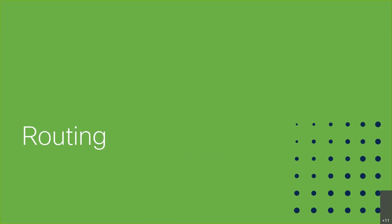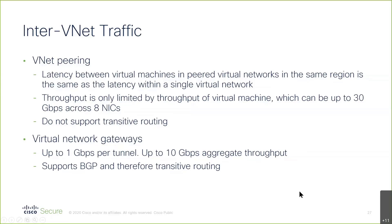The routing is a bit tricky, but we'll cover it fairly quickly. The routing can be peering between VNets, or it can be virtual network gateways, which are basically your VPNs. Peering can be quite fast within the region. The latency and throughput are determined by the VMs. But it really doesn't support transitive routing — there's no BGP. So these peered VNets will learn about each other, but they won't learn about other VNets if you have a chain of peering.